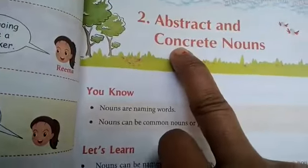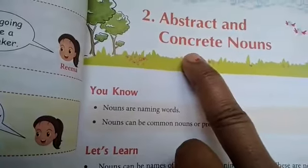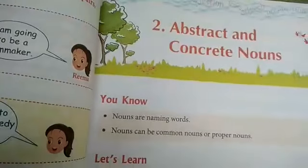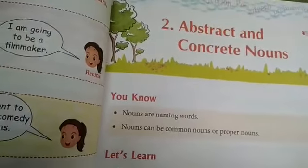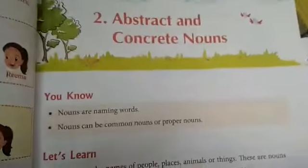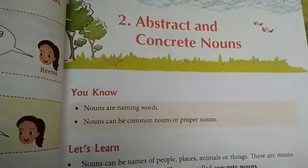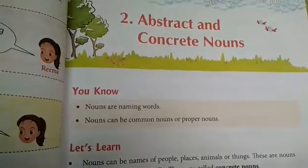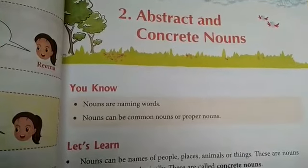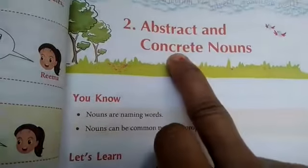And concrete noun — what we can touch physically. Jis noun ko hum touch kar sakte hain. Jaise human beings, teachers, animals, ya koi bhi things, koi bhi saman — us ko hum touch kar sakte hain. These are called concrete nouns.